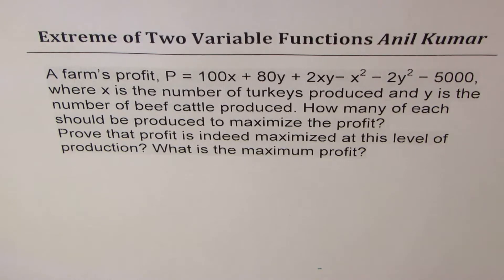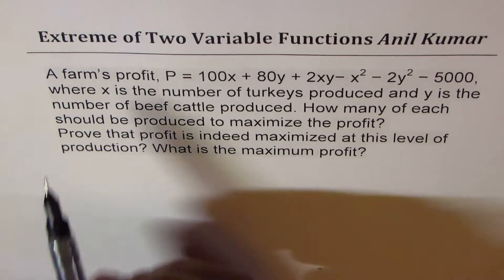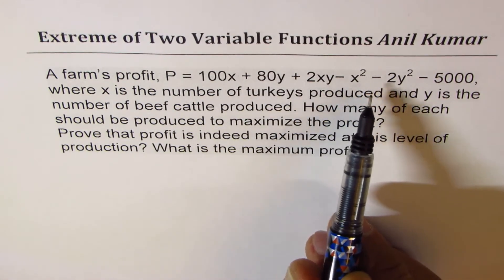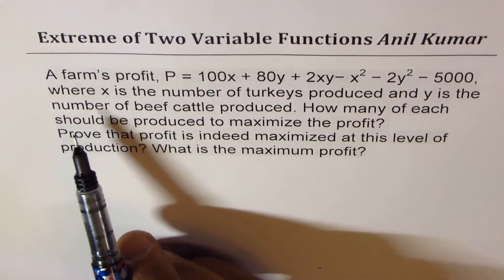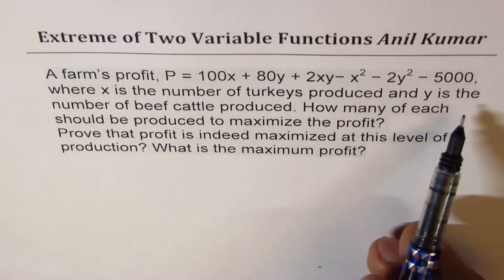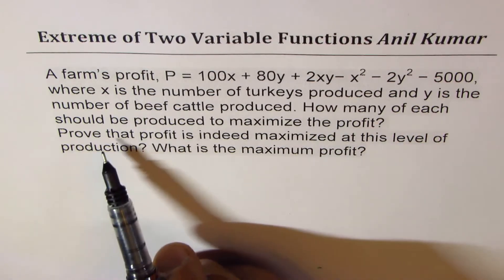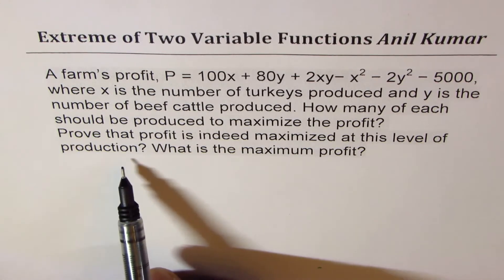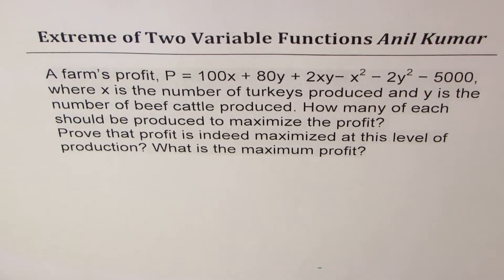Now it is based on multi variables. In schools here we are working with single variables as a very special case. The question here is: a farm's profit P equals 100x plus 80y plus 2xy minus x squared minus 2y squared minus 5000, where x is the number of turkeys produced and y is the number of beef cattle produced. How many of each should be produced to maximize the profit? Prove that profit is indeed maximized at this level of production. What is the maximum profit? It's an excellent question and it will help give very good concepts on multivariable functions and how to find extreme values.